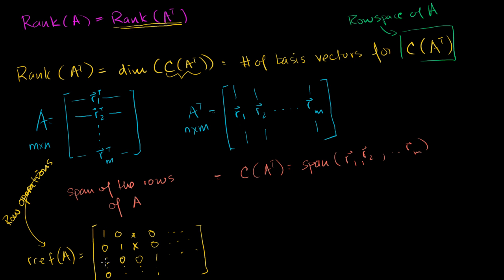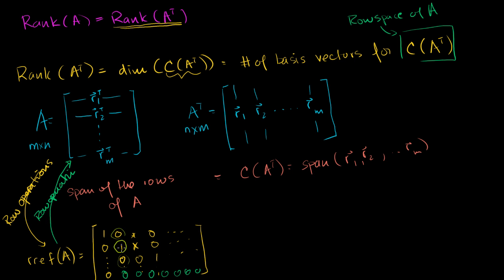You could reverse those row operations — any linear operation can be reversed, as we've seen multiple times. So you could perform row operations on the pivot rows to get all of the original rows. That means all original row vectors can be represented as linear combinations of the pivot rows in reduced row echelon form. And the pivot rows are linearly independent by definition: each pivot row has a 1 in a column where no other row has a non-zero entry, so no pivot row can be a linear combination of the others.